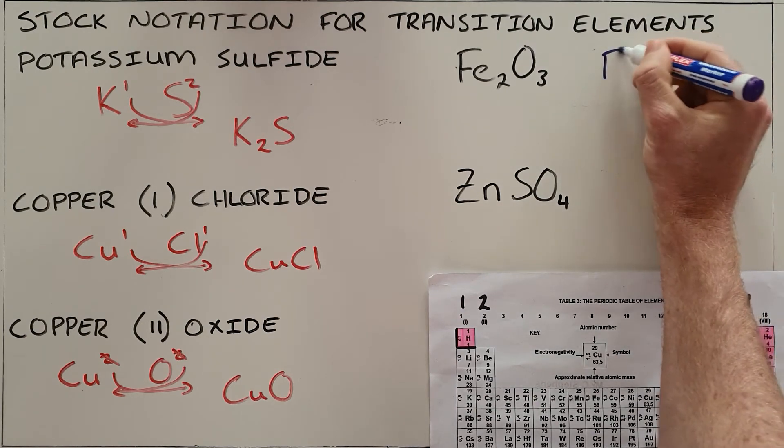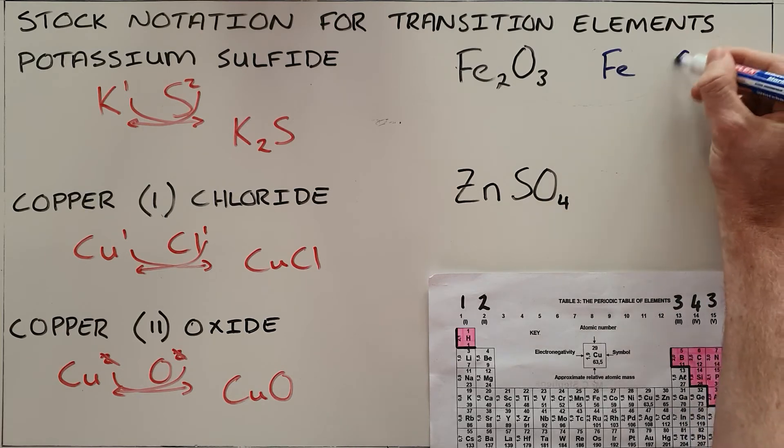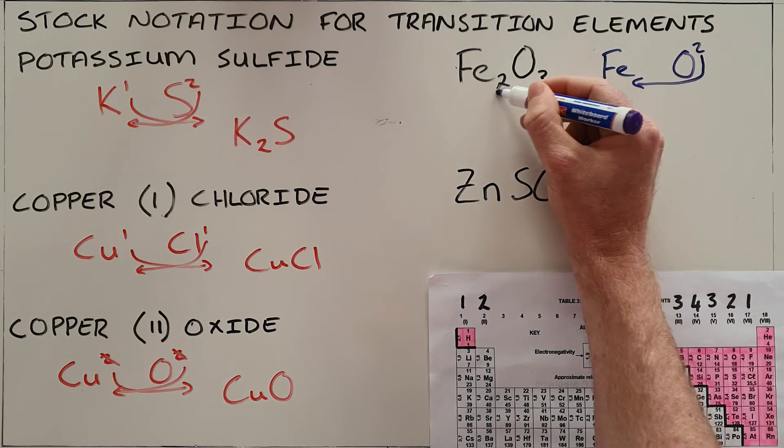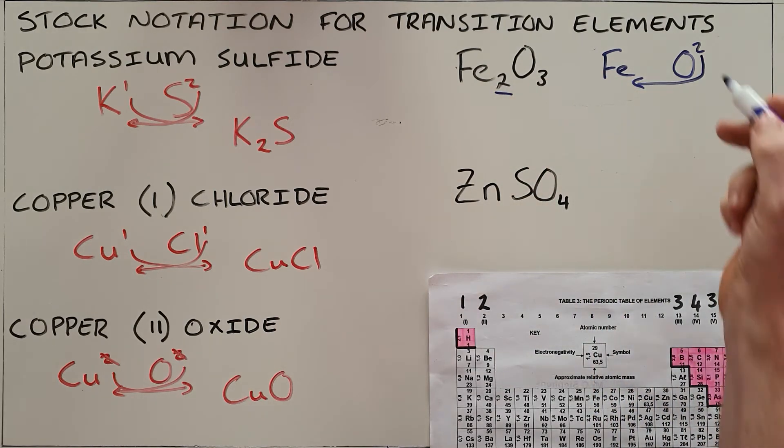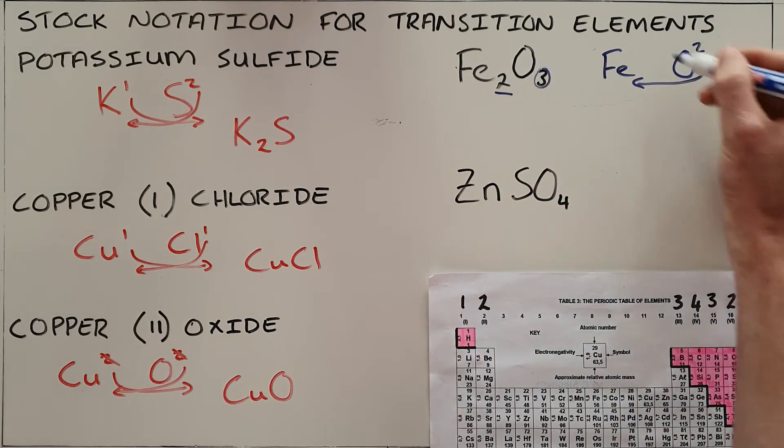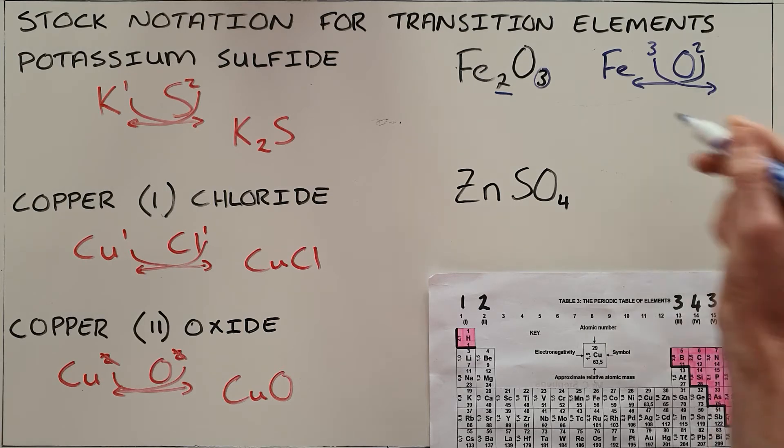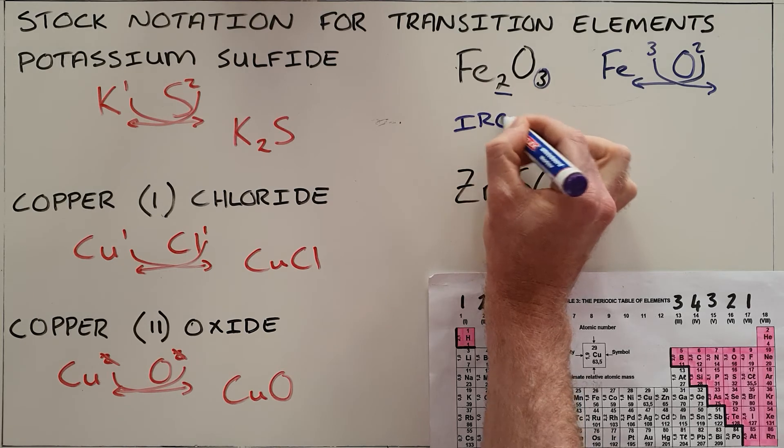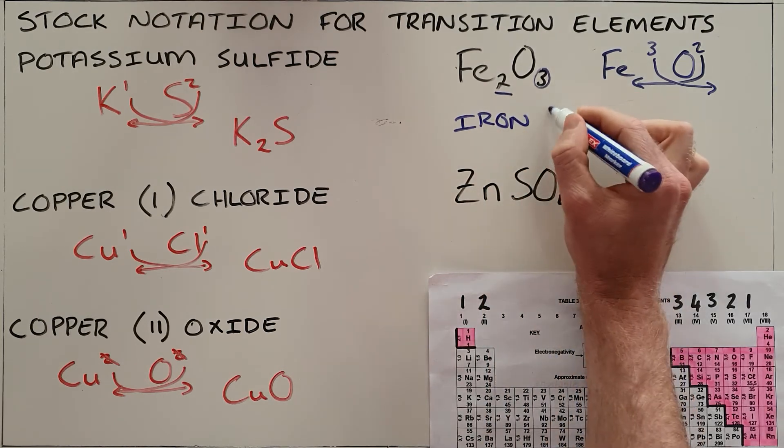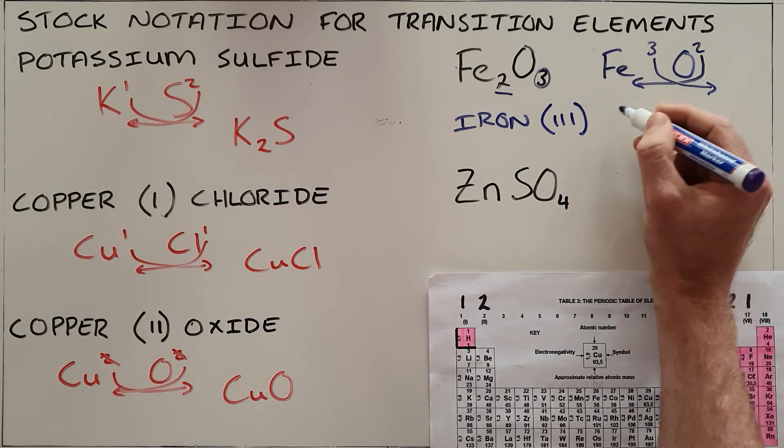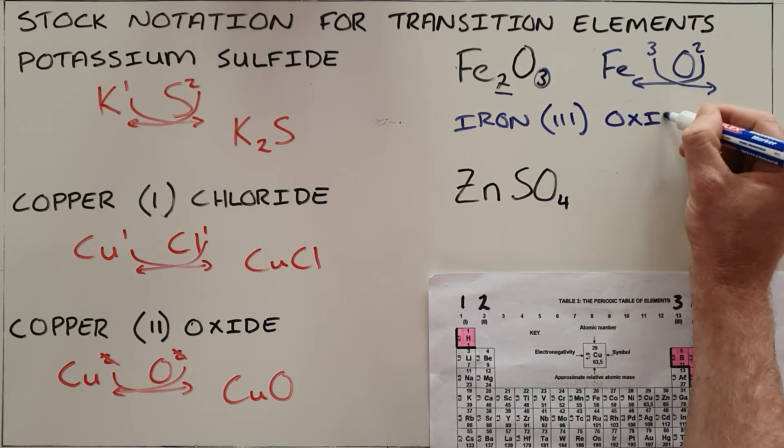We immediately know from the periodic table that oxygen has a valency of 2, which would have swapped and become that 2 that we see at the iron. This 3 that the oxygen has here must be the number that has come from iron. So we know that this iron has a valency of 3 when bonding with oxygen, so when we write the formula we must include that stock notation saying that this is iron(III) oxide.